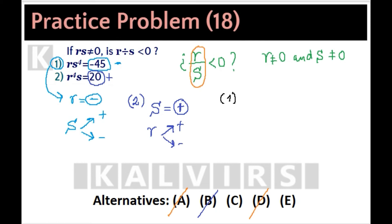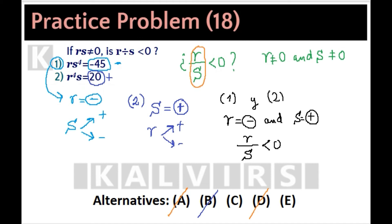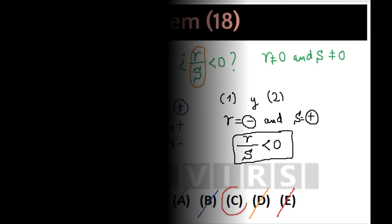Now we need to use both statements together. From statements 1 and 2: R is a negative number and S is a positive number. Therefore, the quotient R over S must be less than 0. Statements 1 and 2 together are sufficient to answer the question. Alternative E is eliminated and choice C is correct.